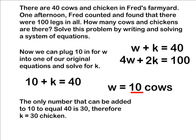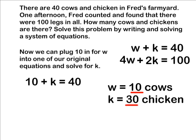The only number that can be added to 10 to equal 40 is 30. Therefore k must equal 30. We can see that 10 plus 30 does satisfy the first equation. 10 cows plus 30 chickens equals 40 total.